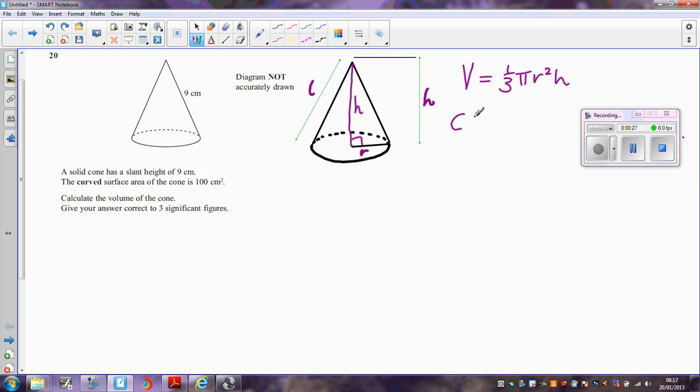You also need to know the curved surface area of the cone. That is just the area of this part, not the circular base. That's again given to you in the formula book as pi r l, where l is the slant height.